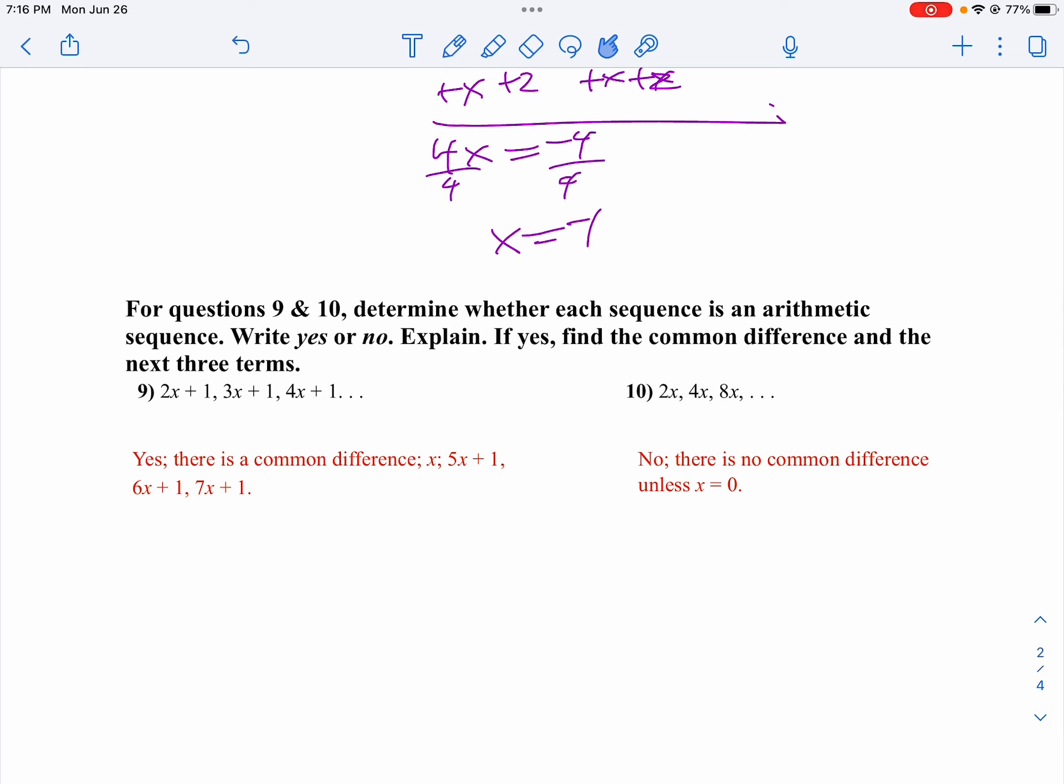At number 9, I want to know, are these arithmetic sequences? So it's kind of the same. From 2x to 3x, looks like I'm going up by x. 1 to 1 doesn't change. Do I go up by x from 3x plus 1 to 4x plus 1? Sure I do. So there is a common difference, so that's my sequence. So I'm just going to add x each time.